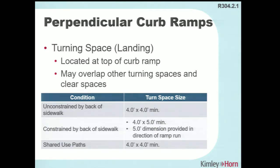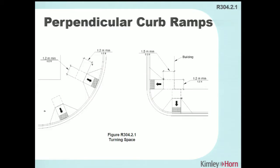Here are examples of perpendicular curb ramps — they can be directional and actually parallel to the crossing, or angled, and they're still considered perpendicular curb ramps.